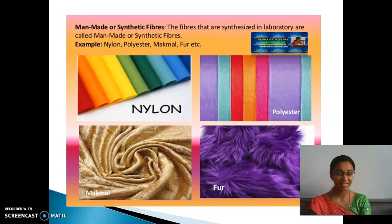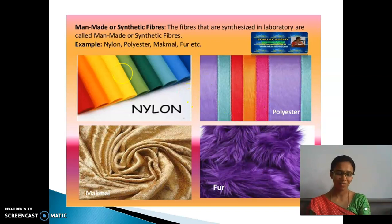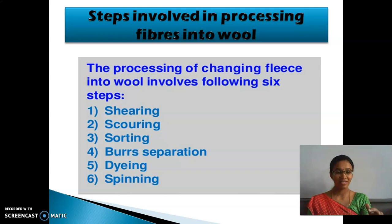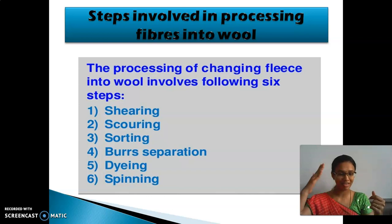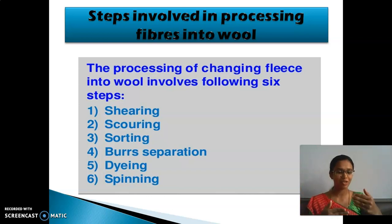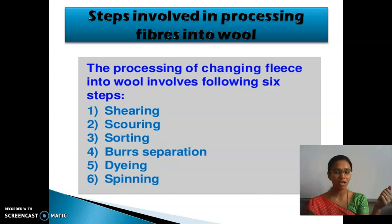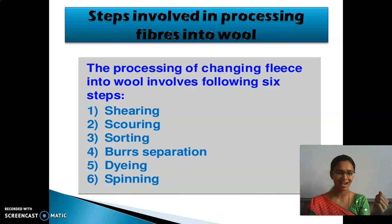These are some examples of man-made or synthetic fibers - nylon, polyester, etc. We have seen about the processing of wool. The processing of cotton and jute you studied in sixth standard. Now we are studying about the steps involved in processing fibers to wool in seventh standard. What are the sources of wool? They are camel, sheep, goat, yak, and even rabbit also.